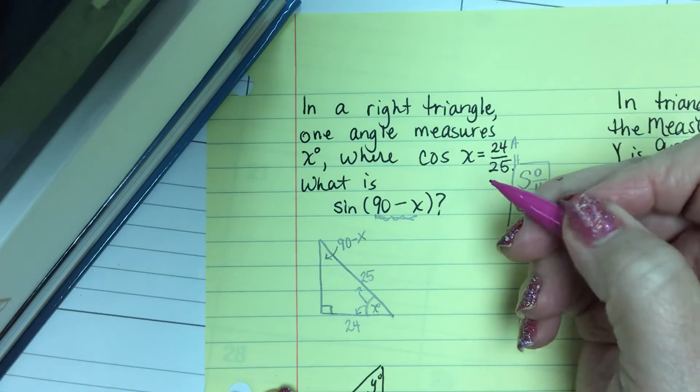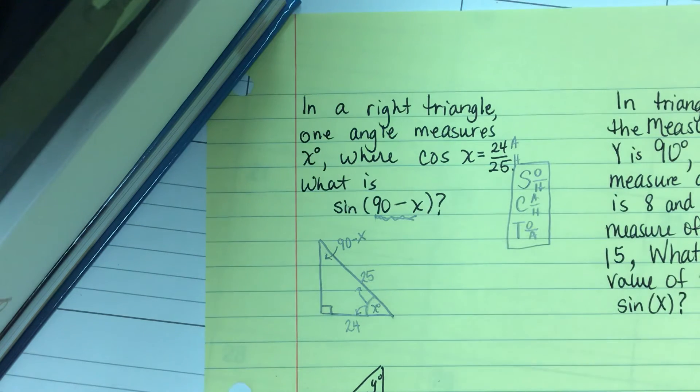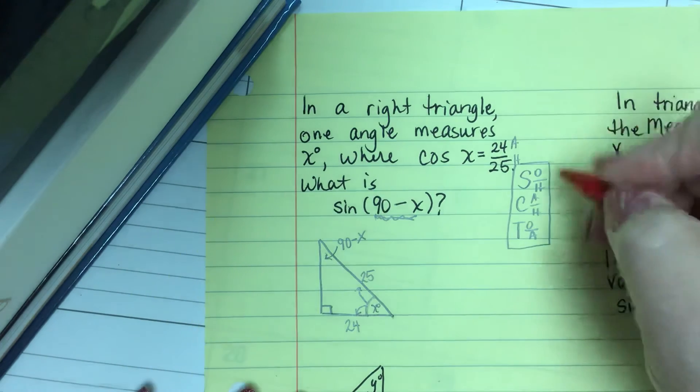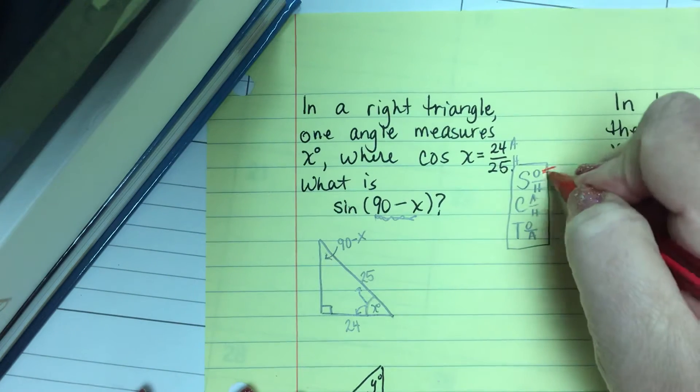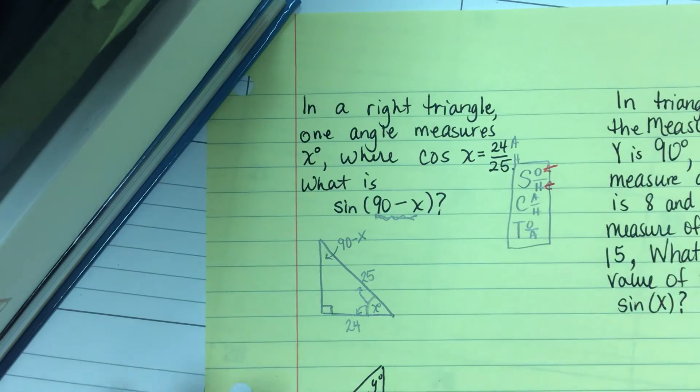And I want to find the sine of 90 minus x. Do I or do I not need to do the Pythagorean theorem? Well let's see. Let's see if I have the opposite side and the hypotenuse. If I have those things, I don't need to do the Pythagorean theorem.